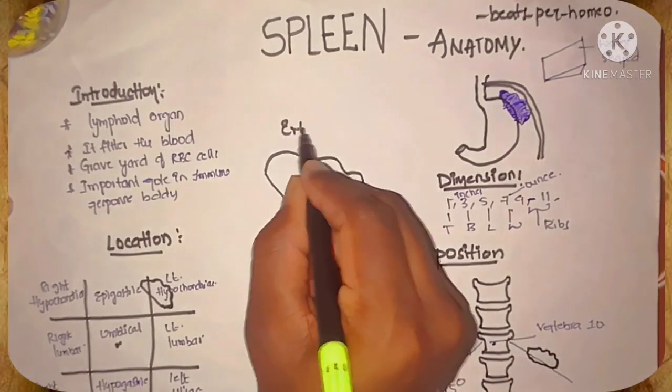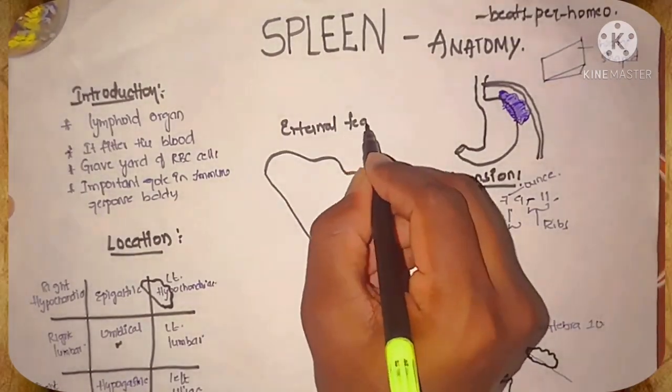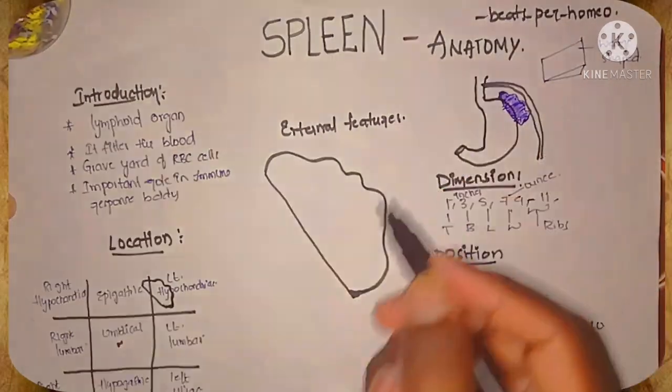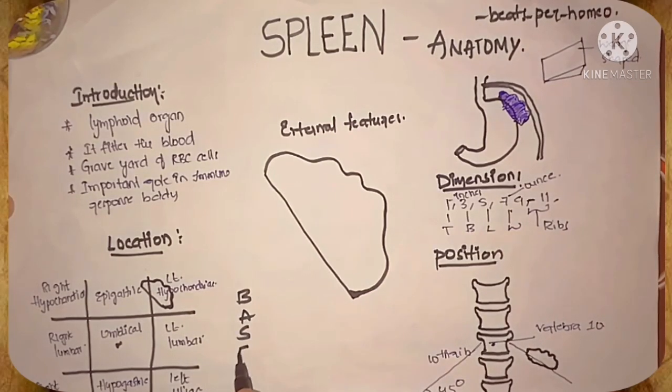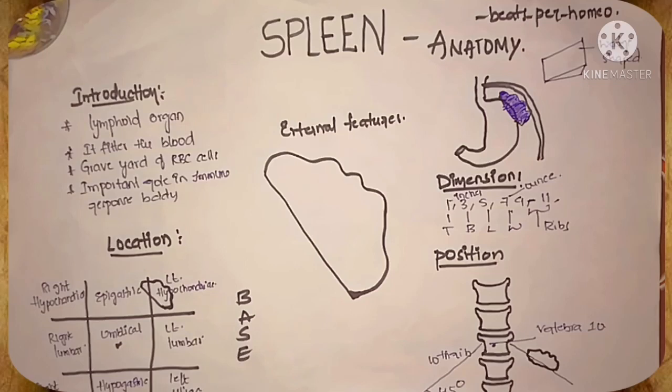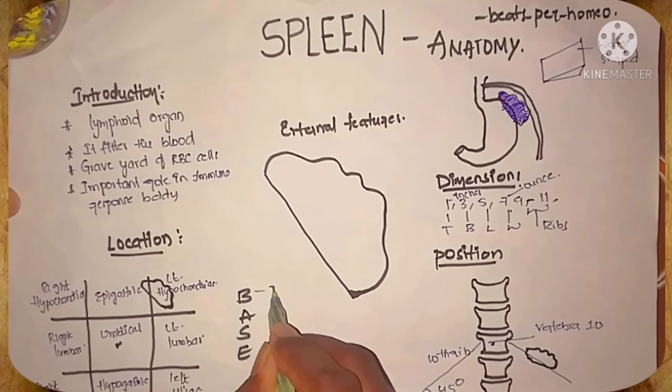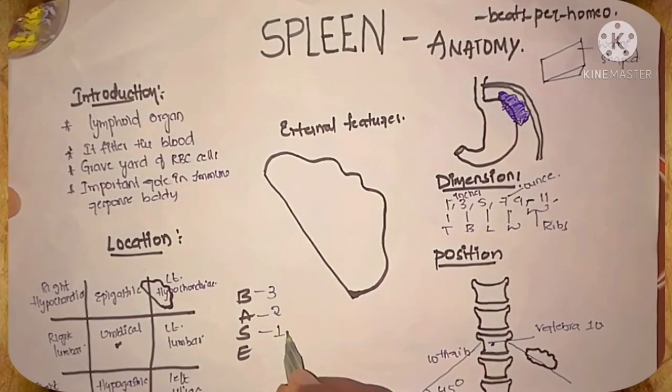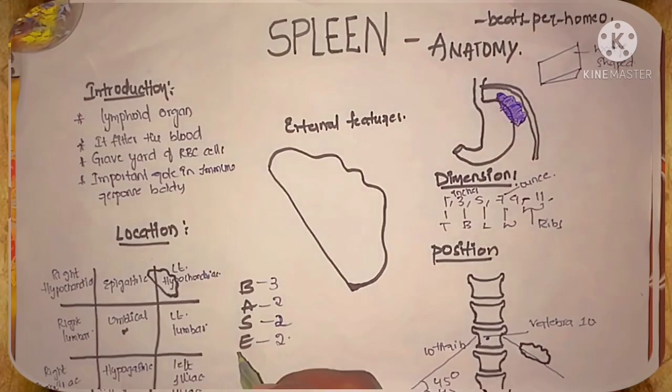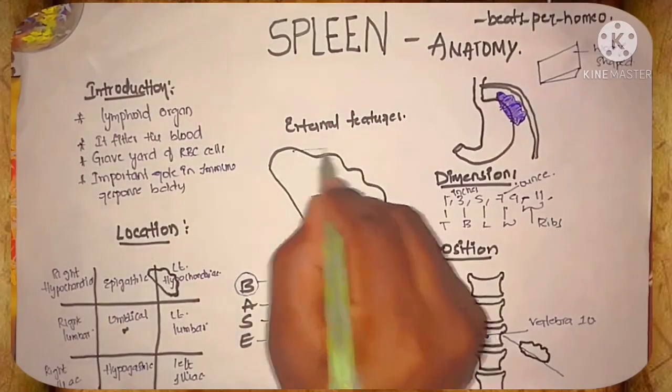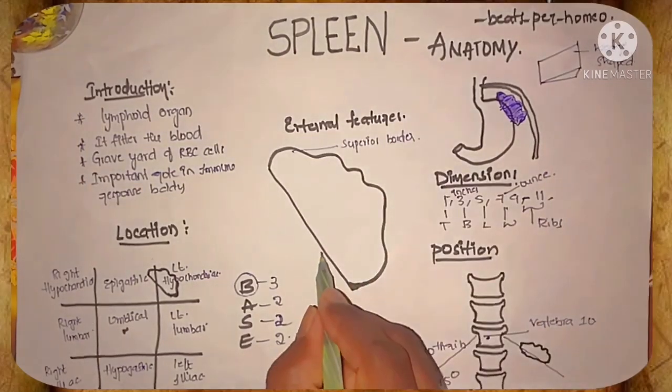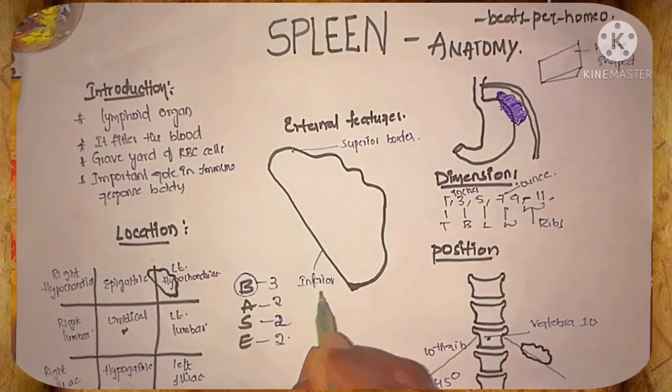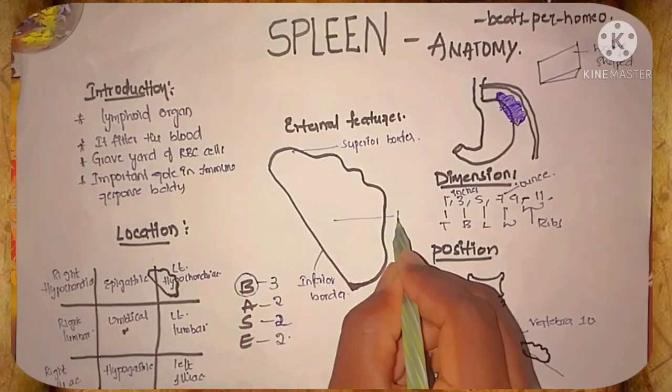Coming to the external features of the spleen. Just remember the word BASE. It covers all external features of the spleen. B for borders, three borders; A for angles, two angles; S for surfaces, two surfaces; E for ends, two ends. The three borders are superior border, inferior border, and intermediate border.